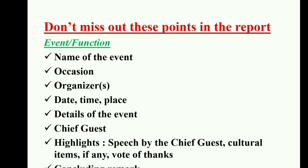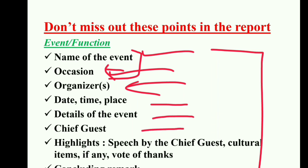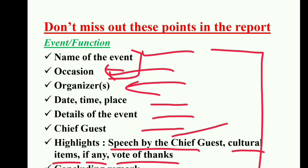First of all, you will write the heading and byline, and then these are the points that should be in your report. First, name of the event and occasion. Then comes organizer — who is organizing the event — date, time, and place. Then details of the event, chief guest and highlights, speech by the chief guest, and cultural items if any, and vote of thanks. So: lighting of the lamp, garlanding, chief guest speech, cultural items one by one — song, dance, poetry, recitation — and at last vote of thanks. Then you write a concluding remark about the function — whether it was good or extraordinary.